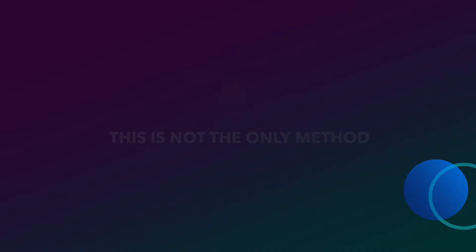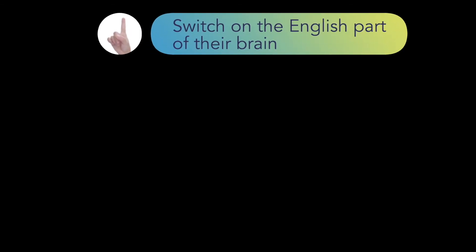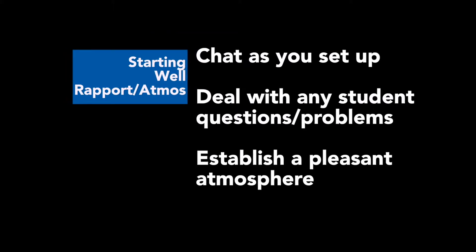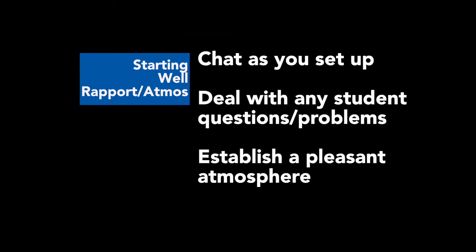Beginning a class, we need to do two things: switch on the English part of the students' brains, and build some rapport — create the atmosphere, all that feel-good stuff. So if we're going to start well, we can chat as we're setting up, writing things on the board. We can deal with student problems on a one-to-one basis and basically establish that kind of nice, pleasant atmosphere.